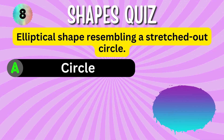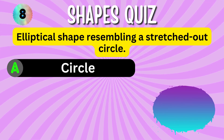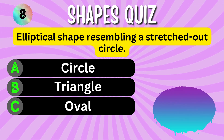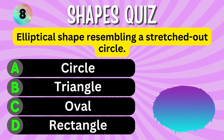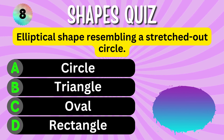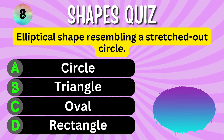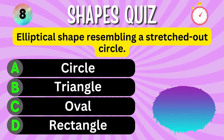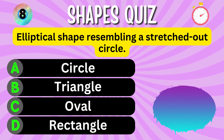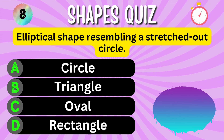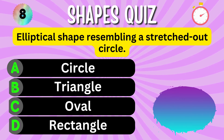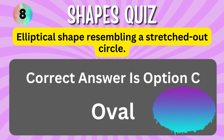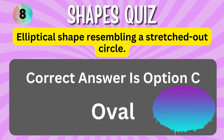An elliptical shape resembling a stretched-out circle. Option A. Option B. Option C. Option D. You have 5 seconds to choose the correct answer. Your time starts now. The correct answer is Option C, Oval.